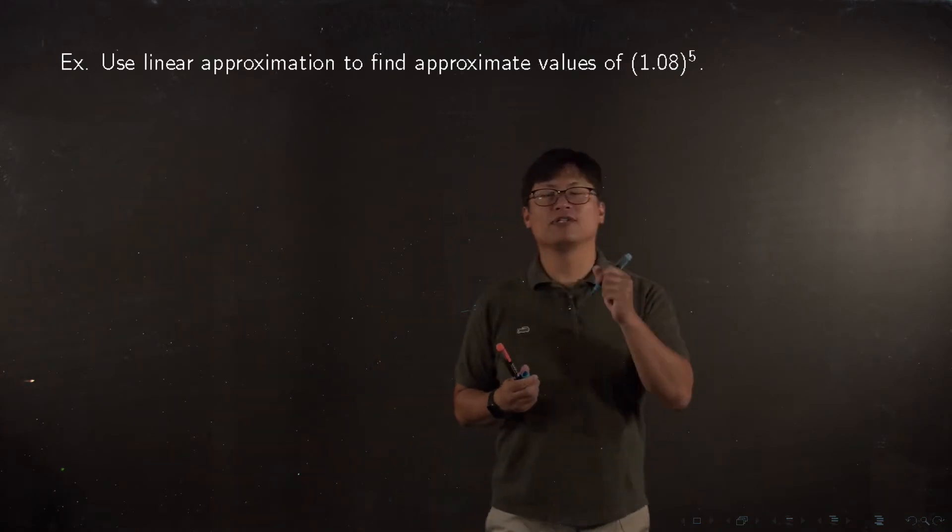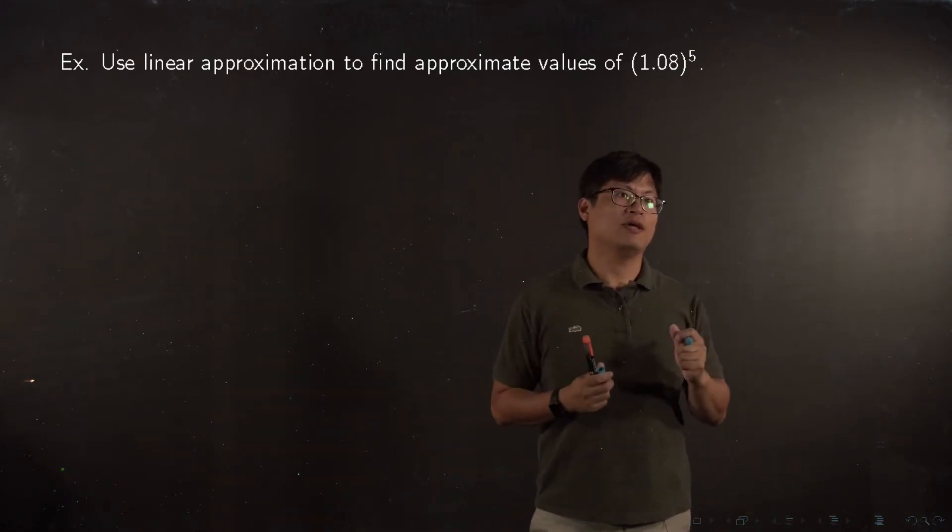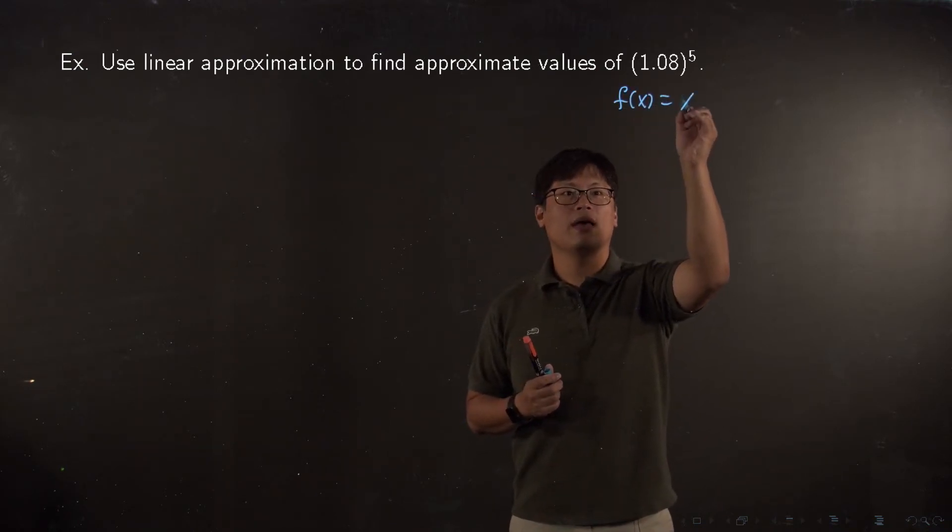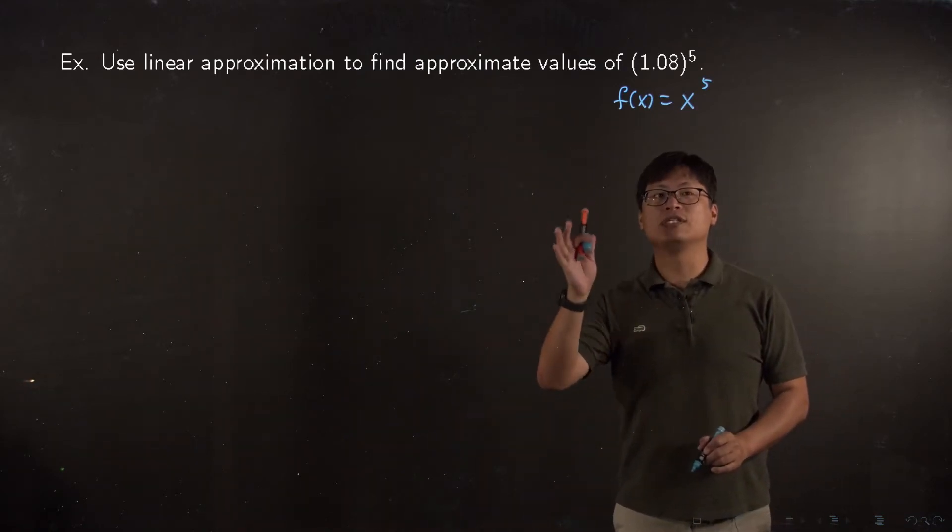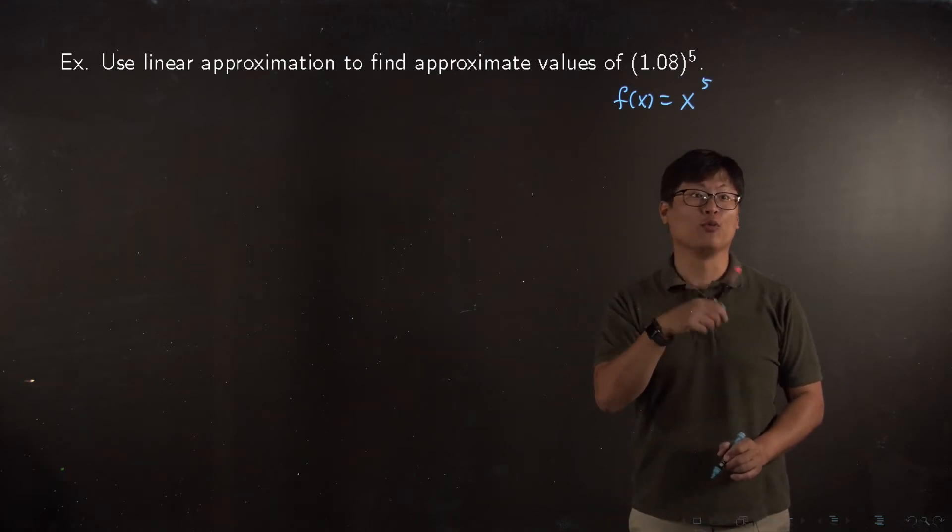So let me figure that out. For this problem, we have to decide the function and the point. The function will be x to the fifth, and which point is near and well known? It's 1 to the fifth, which equals 1.